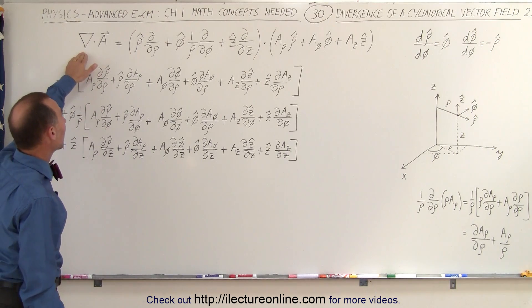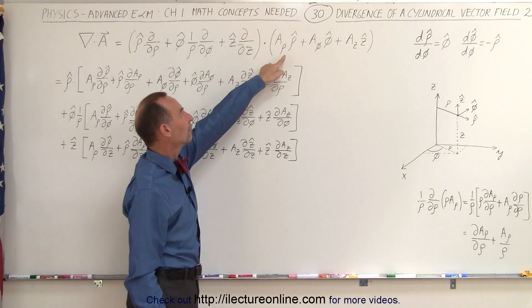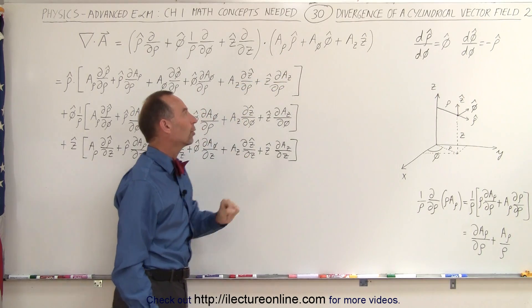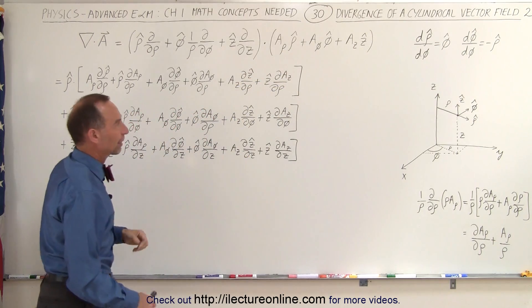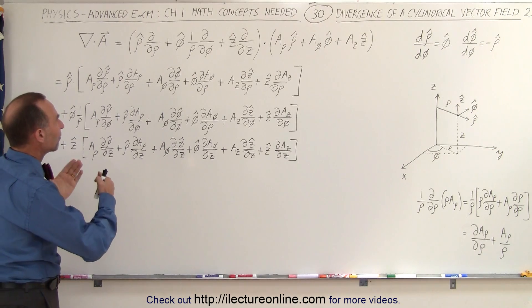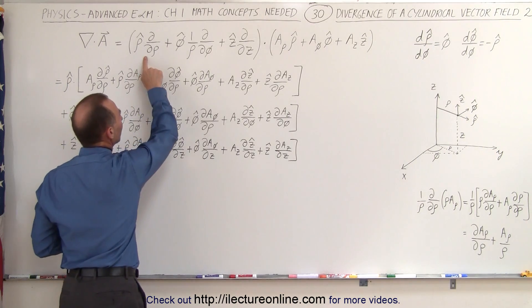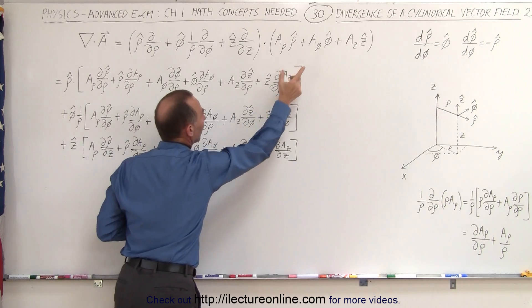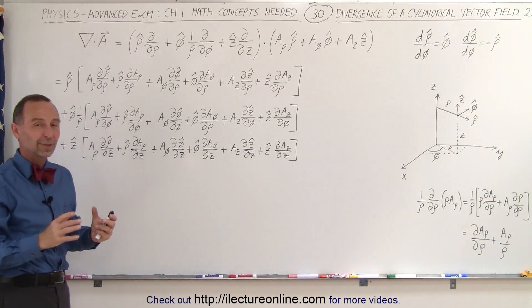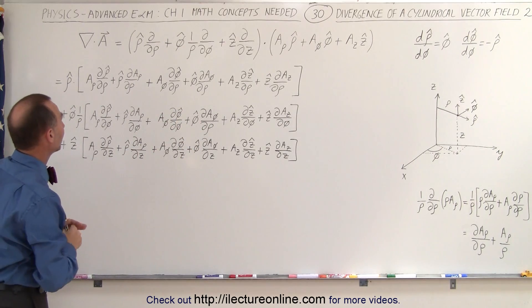Here we have the del operator and we're going to multiply that times the vector. There's the rho, the phi, and the z coordinates of the vector field. When we take the divergence of that, notice that for each term applied to each of those three components we're going to end up with two separate terms — so three times three times two gives a total of eighteen terms.